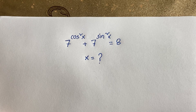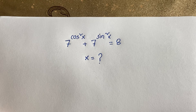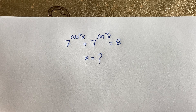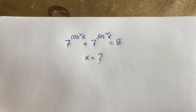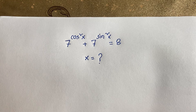Hello everyone. In this video we have solved this interesting math question: 7 to the power cos squared x plus 7 to the power sin squared x is equal to 8. What is x? It is an interesting trigonometric math. Let's start.